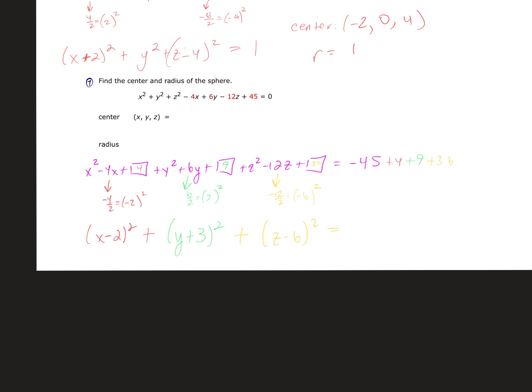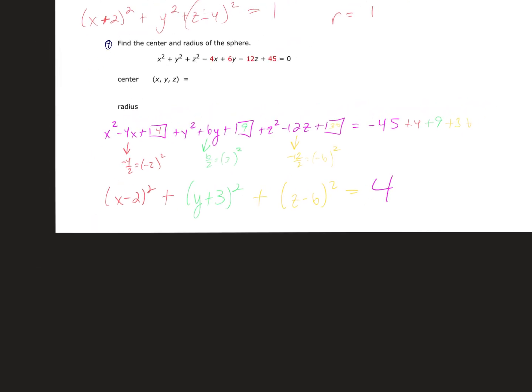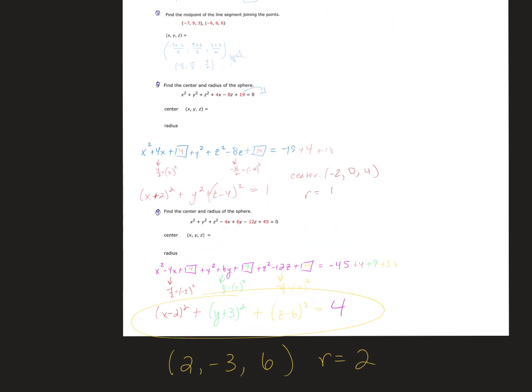So the right side is −45 + 4 + 9 + 36 = 4. The equation is (x − 2)² + (y + 3)² + (z − 6)² = 4. The center is (2, −3, 6) and the radius is 2. The radius isn't ±2 because distance can't be negative.